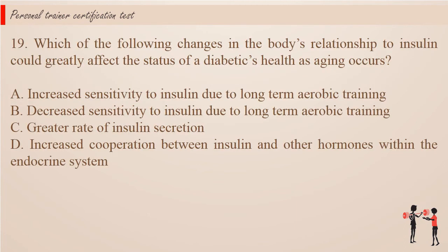Question 19. Which of the following changes in the body's relationship to insulin could greatly affect the status of a diabetic's health as aging occurs? a. Increased sensitivity to insulin due to long-term aerobic training. b. Decreased sensitivity to insulin due to long-term aerobic training. c. Greater rate of insulin secretion. d. Increased cooperation between insulin and other hormones within the endocrine system.